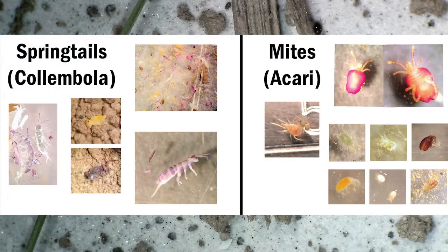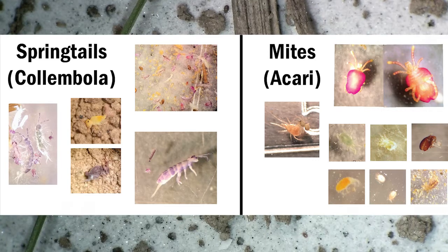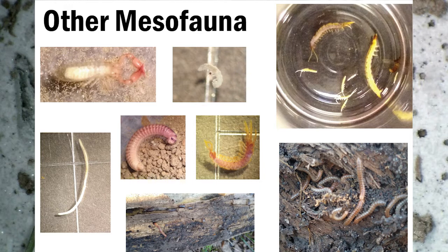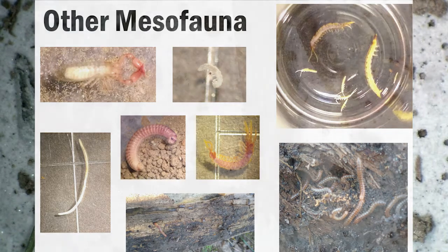This group of soil fauna is dominated by collembola, commonly called springtails, and mites. Other fauna such as pseudoscorpions, potworms, small centipedes and millipedes, and others also make up this group, however these types of mesofauna are found in much lower abundances than the springtails and mites.